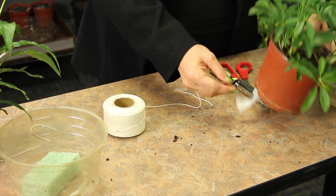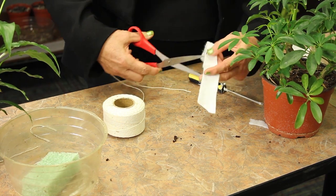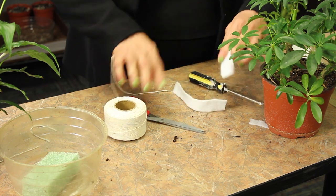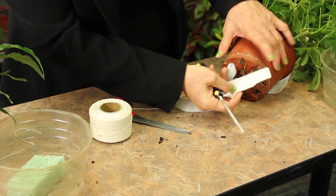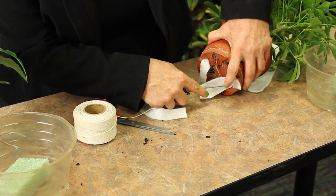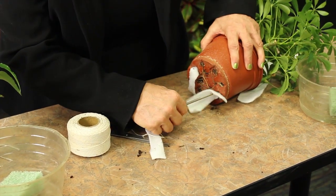So here we have a Dwarf Schifalera, and I've used a polyester batting. You take the batting and do a small strip, and then that strip needs to be inserted in the bottom of the pot. All you do is take a screwdriver and put it up into the soil.